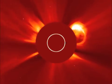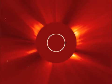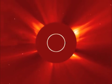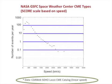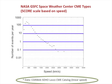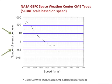NASA uses coronagraphs to take images of CMEs. From these images, we can estimate the CME speed. Here's a plot showing how often CMEs with a certain speed are measured by SOHO-LASCO. The x-axis is the speed in kilometers per second, and the y-axis shows the number of CMEs per year.